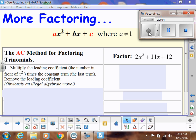This is going to be the last strategy I'm going to show you for factoring a quadratic trinomial where A is not equal to 1. We're going to call this method the AC method.